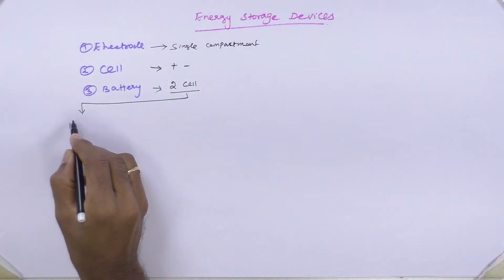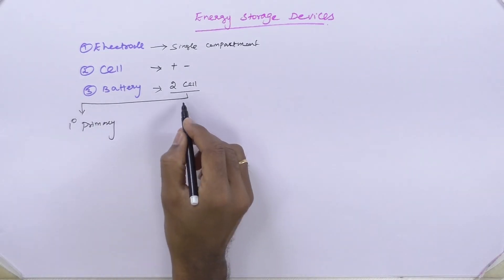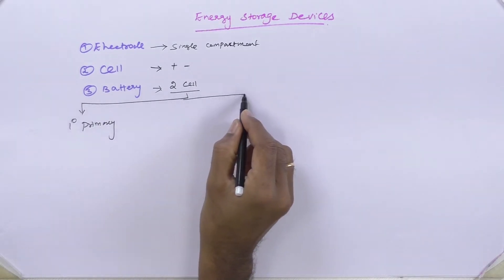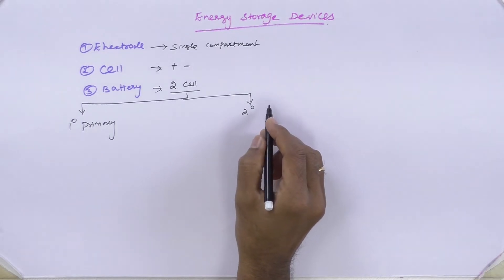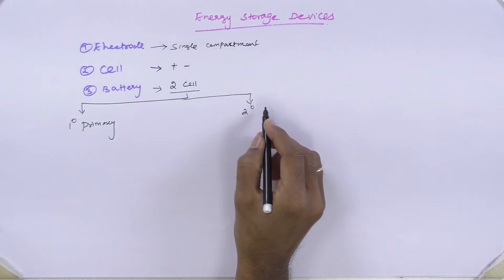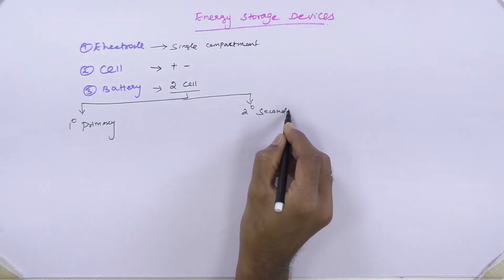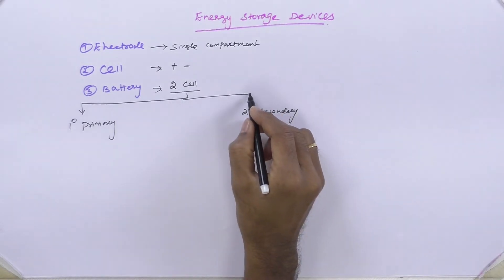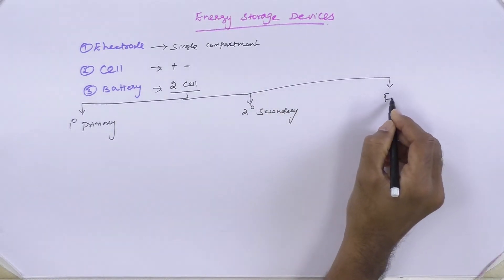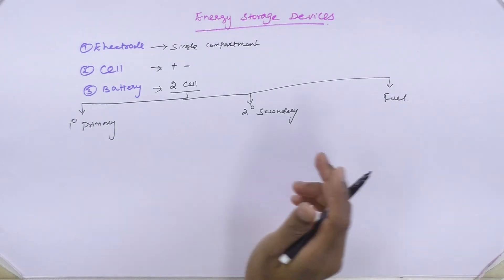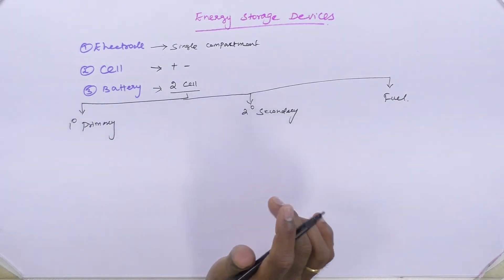The first one is going to be primary battery, the second one is going to be secondary battery — also called secondary storage devices — and the last one is a kind of cell called a fuel cell, which I will talk about later. Today I am going to focus on both primary and secondary battery.